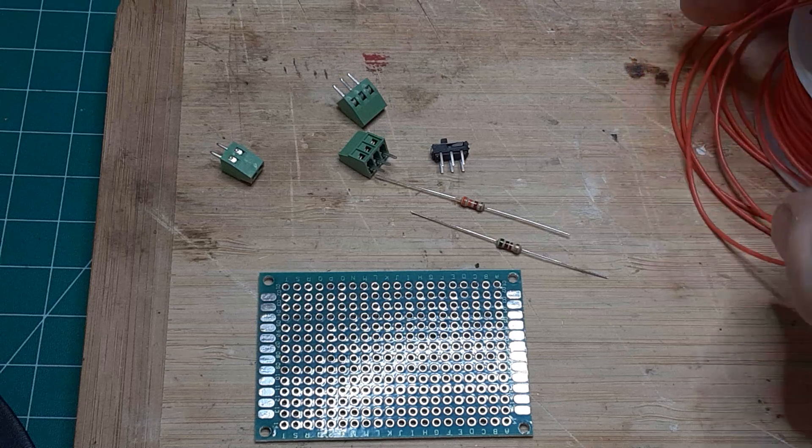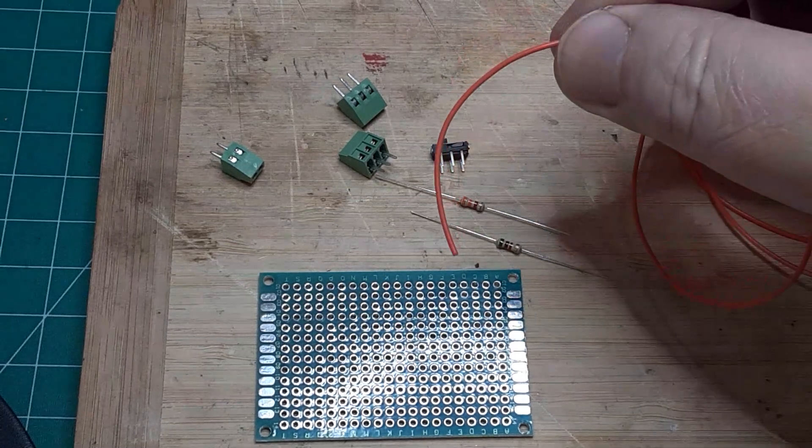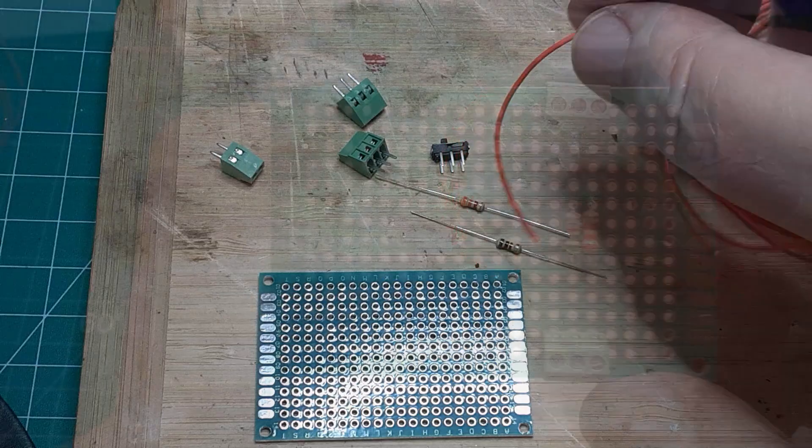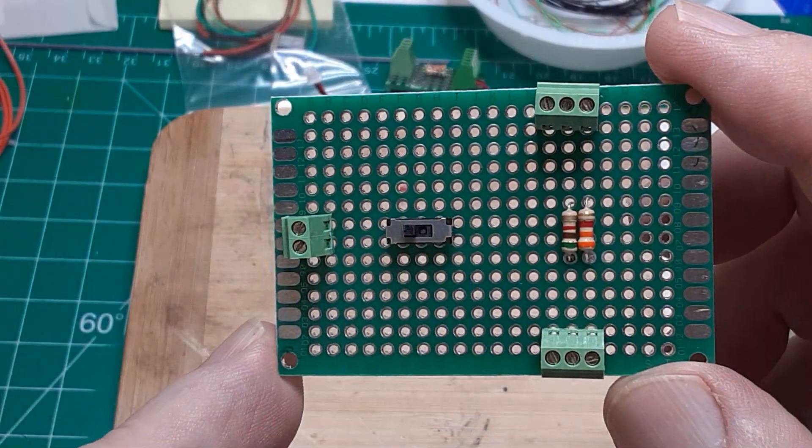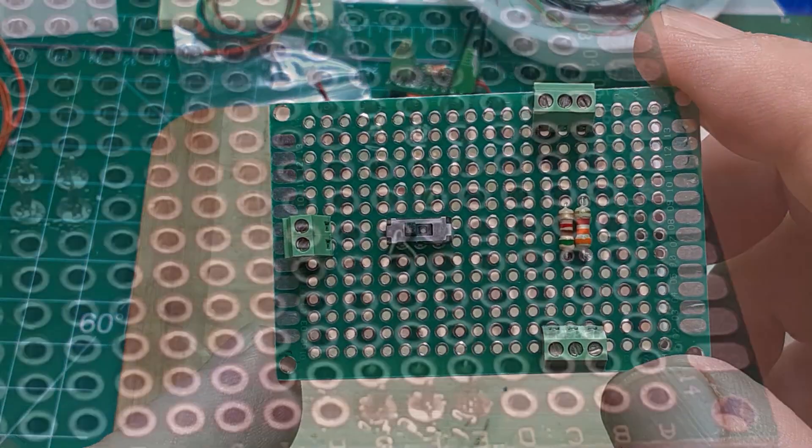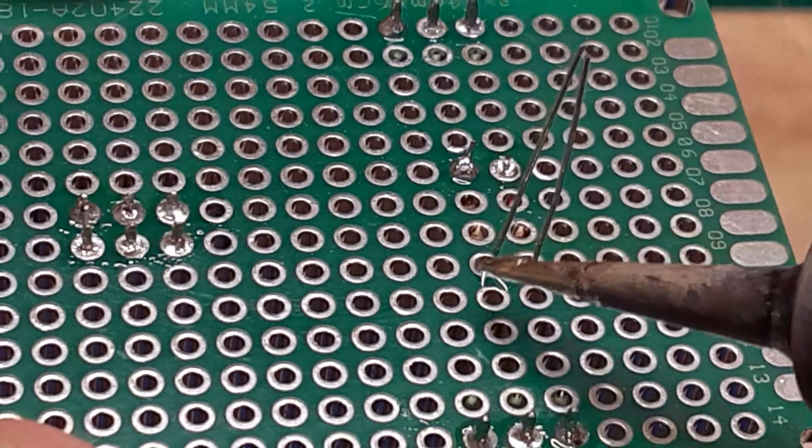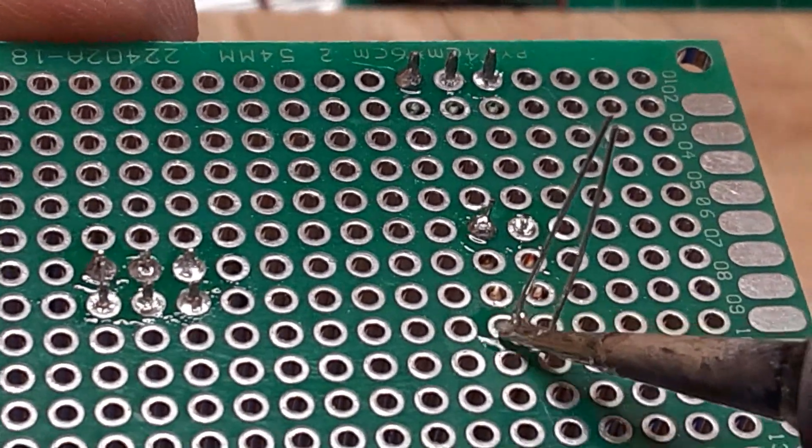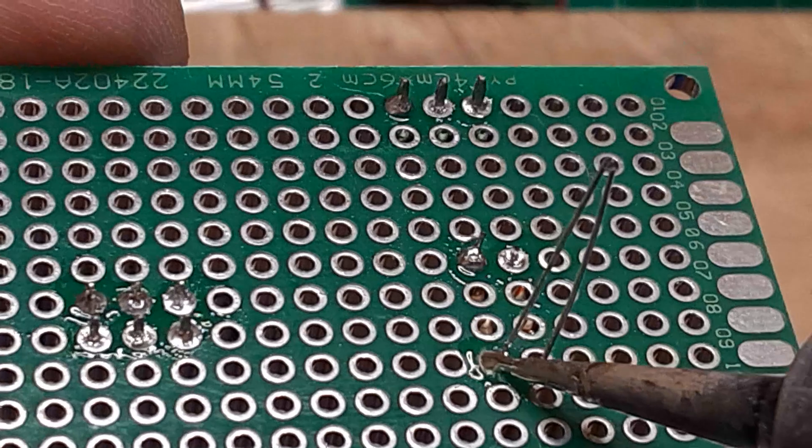Any stray wire strands can cause shorts, which are nearly impossible to find and fix. Start by inserting the components into the board, as shown here, and soldering them into position.